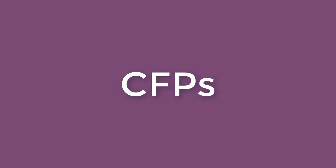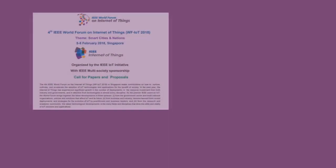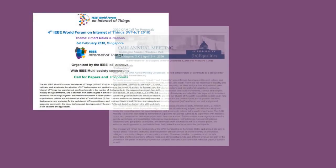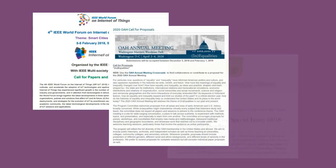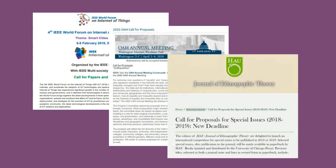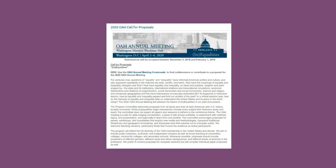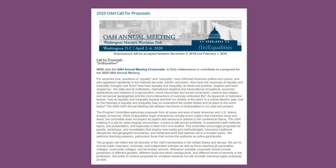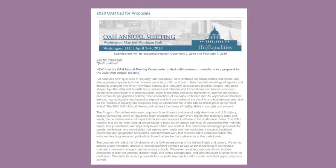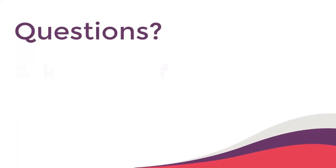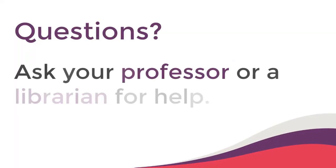CFPs can come from a variety of places, such as professional organizations and societies holding annual conferences, or journals looking for articles on a particular topic for a special issue. Regardless of where they come from, CFPs often have clear guidelines for submission, such as the due date or submission length. If you have any questions about proposals, be sure to ask your professor or librarian for help.